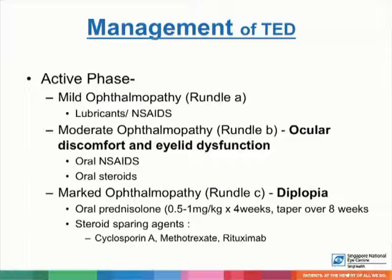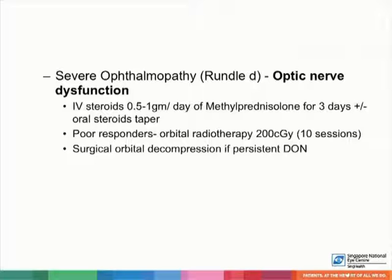In managing patients who are in the active phase, mild ophthalmopathy with mostly lid signs or injection and erythema should be managed with topical lubricants as well as non-steroidal anti-inflammatory drugs. Patients with moderate ophthalmopathy who experience ocular discomfort and eyelid dysfunction ought to be covered with oral non-steroidals or oral steroids. If patients have diplopia, then systemic steroid cover may be considered. Other steroid-sparing agents such as cyclosporine, methotrexate, and rituximab have also been described. Patients with severe ophthalmopathy — those with optic nerve dysfunction, exposure keratopathy, or glaucoma — ought to be controlled first with intravenous methylprednisolone. Some patients who are poor responders may even require radiotherapy, and if indicated, surgical orbital decompression for optic neuropathy.